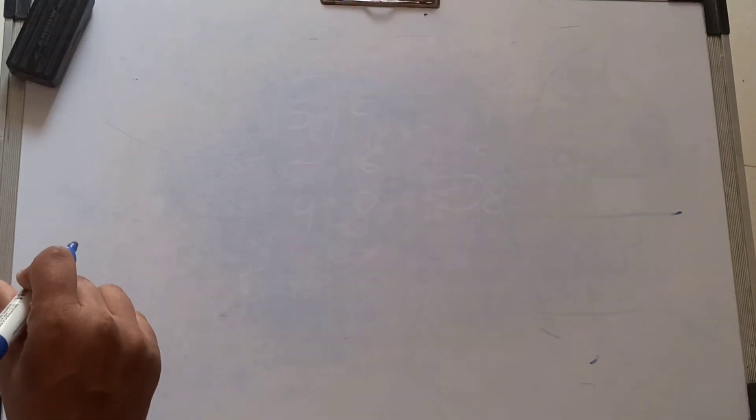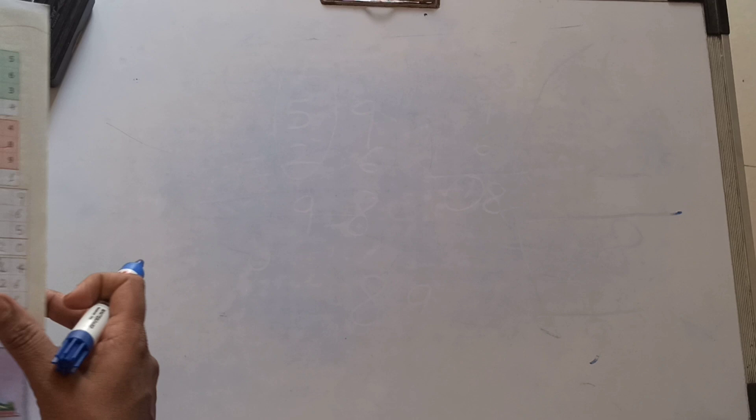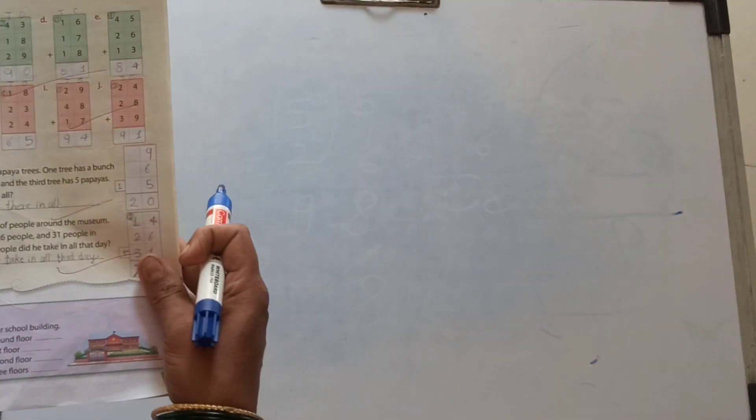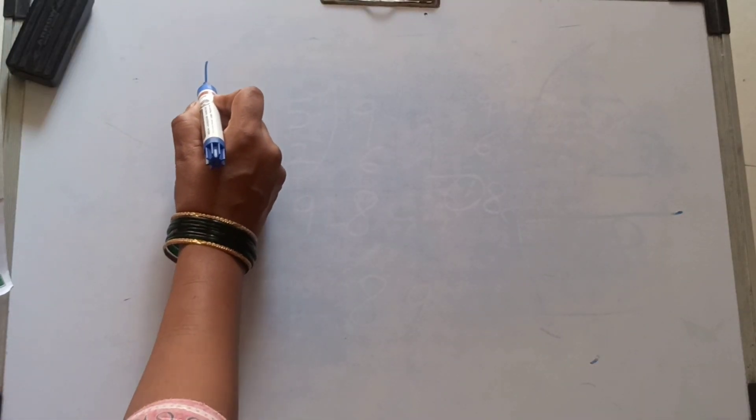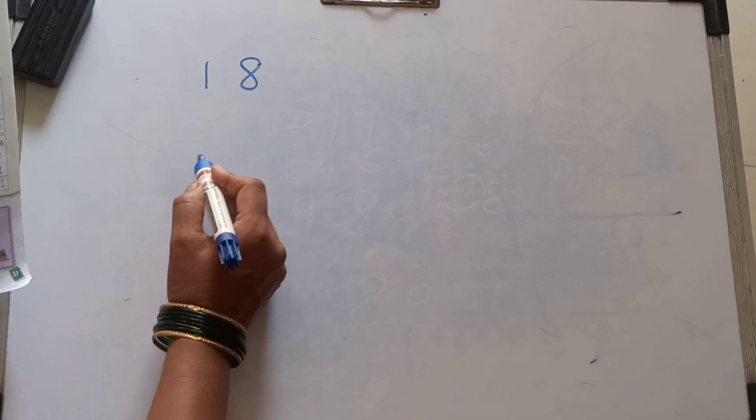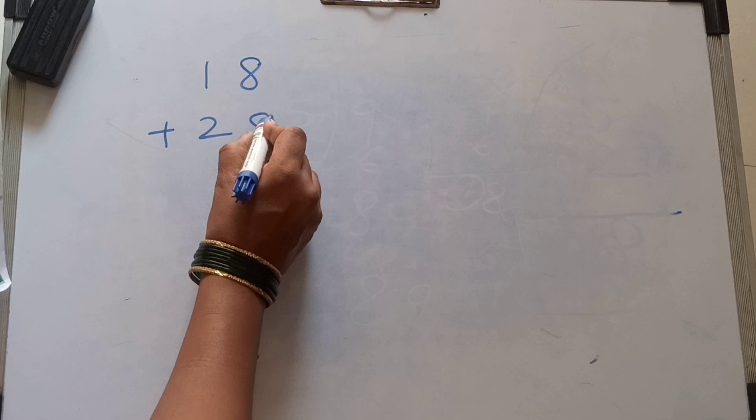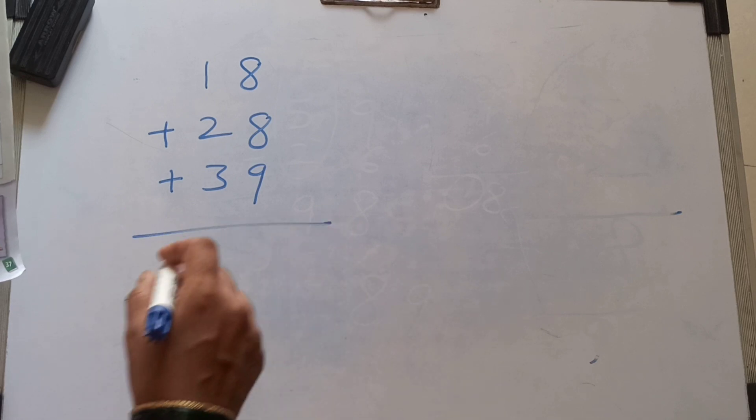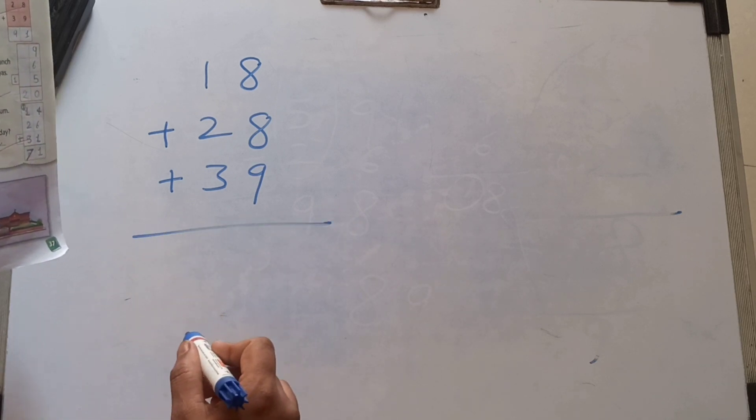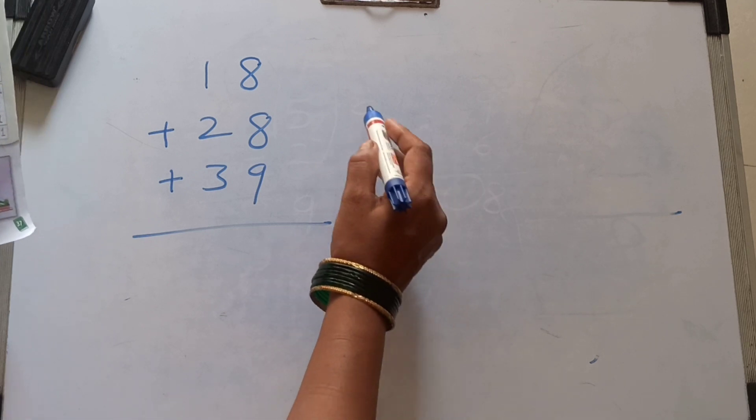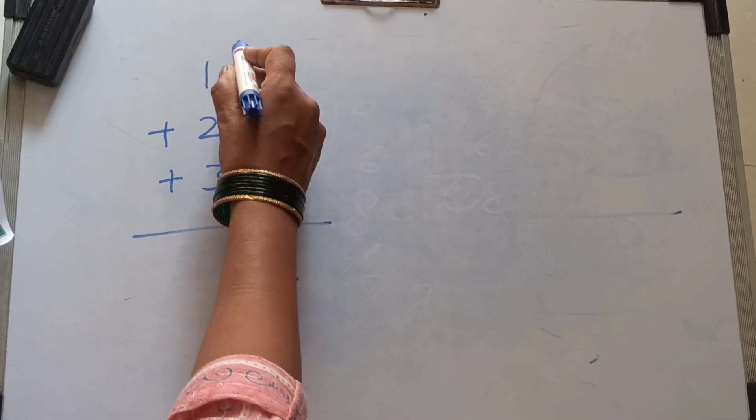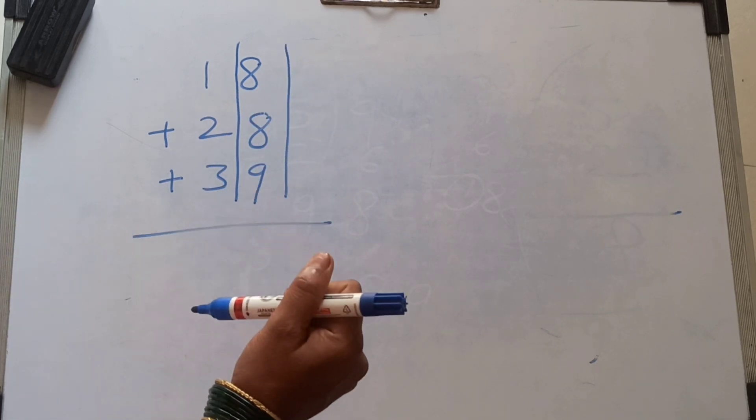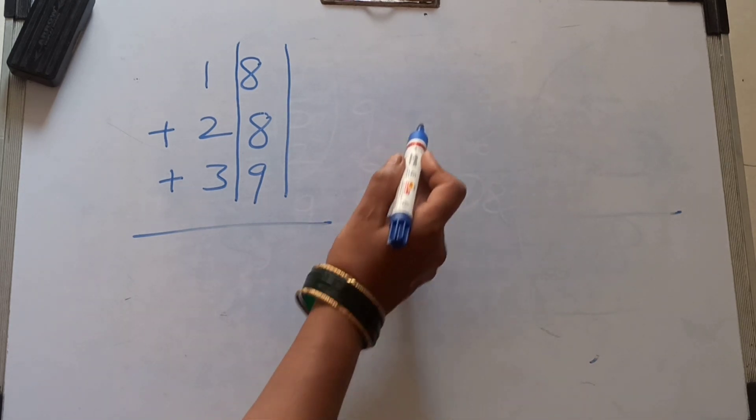Next, sometimes you may need to regroup 21 into 10. See: 18 plus 28 plus 39. First we form the ones place, and first add ones place numbers.